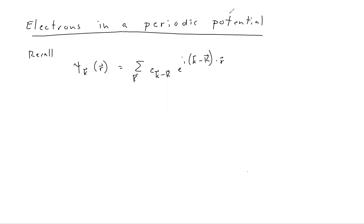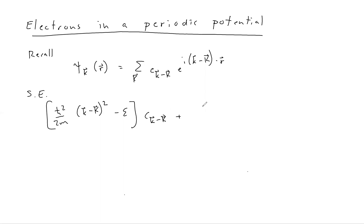Remember, we could write the wave function like this when we proved Bloch's theorem by expanding the Schrödinger equation and the wave functions as a Fourier series in plane waves. This wave function is a solution to the Schrödinger equation, which can be written in a simplified form because we can expand both the wave function and the lattice potential in plane waves. This sum is over all reciprocal lattice vectors K prime.